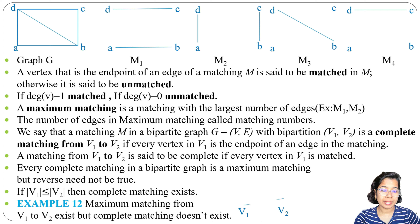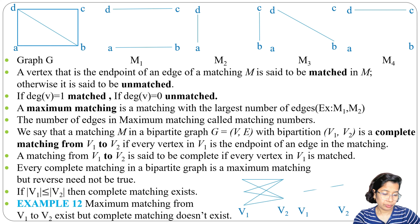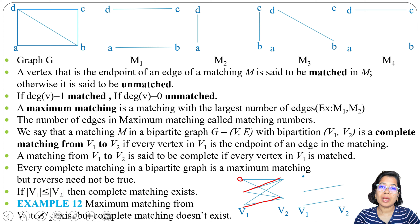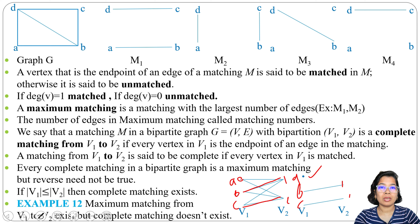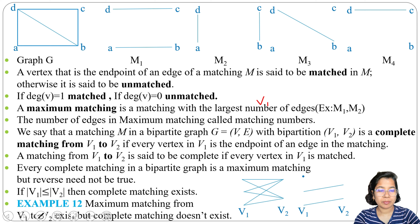Let's see an example where V1 has 3 vertices and V2 has 2 vertices. This is a bipartite graph. When we try to do the matching, after adding two edges one vertex in V1 is left unmatched. Suppose vertices are A, B, C in V1 and 1, 2 in V2 — vertex A is unmatched. Hence this is not a complete matching, because all vertices of V1 must be matched for a complete matching.